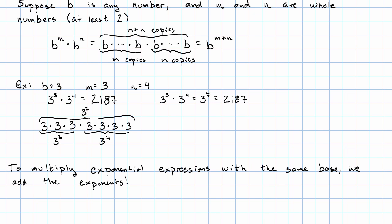So if I wanted to take, for example, 2 to the 5th times 2 to the 3rd, well, that would be 2 to the 5 plus 3. So 2 to the 8th.